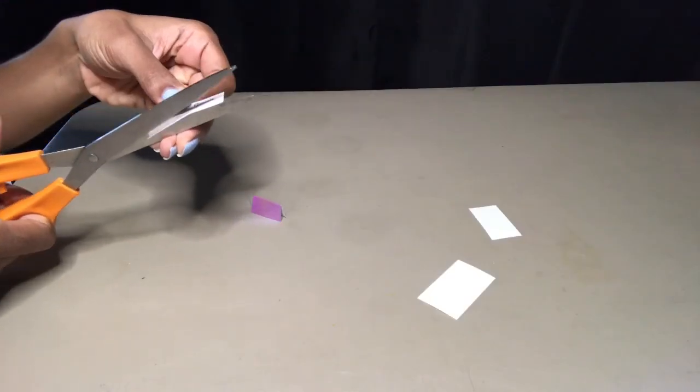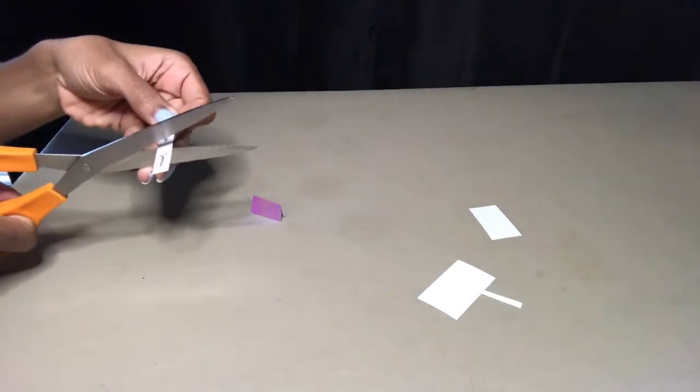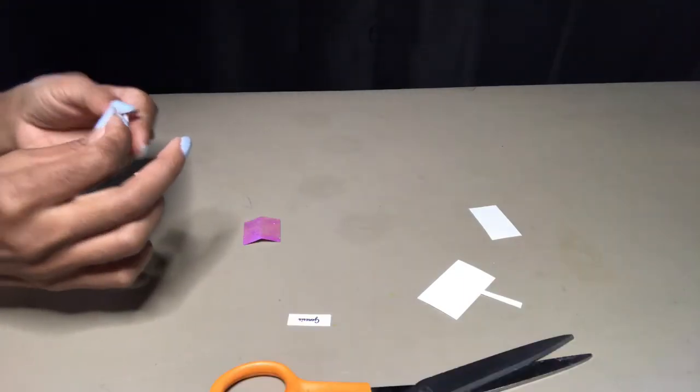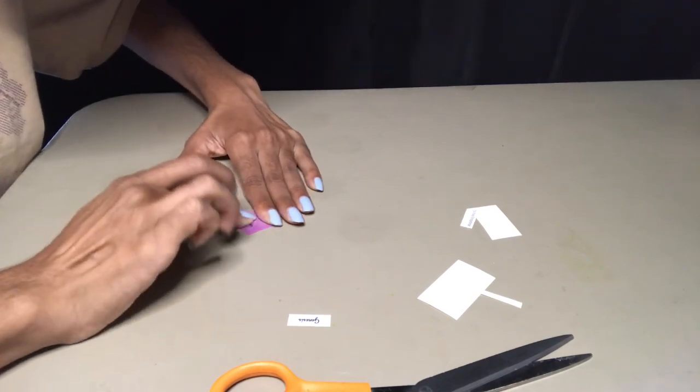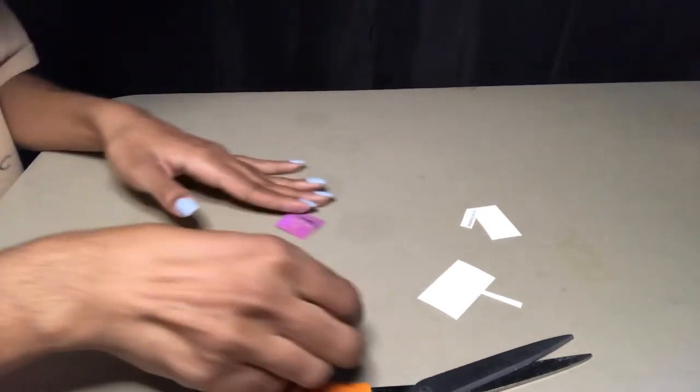Then you're going to cut your labels out. Make sure you get as close as you can to the word. Peel the sticker off. And you want to place the label close to the fold line as possible.